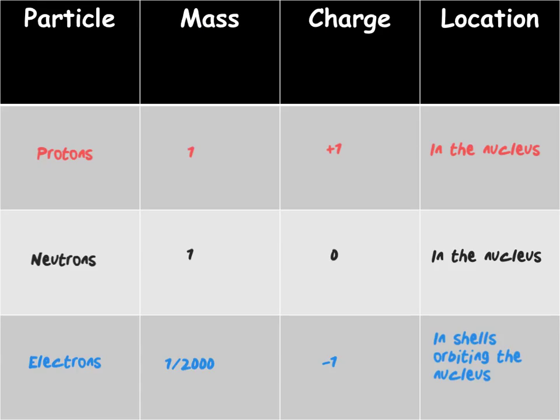For each of these subatomic particles, you need to know their name, their mass, their charge and their location. Protons have a mass of one. They have a charge of plus one. They are the positive subatomic particle. As we mentioned on the previous slide, they are found in the nucleus, in the centre of the atom. Also found in the nucleus are the neutrons. They also have a mass of one. However, they do not have a charge. They are neutral. Finally, you have electrons, who are found in shells orbiting the nucleus. Unlike protons, they have a negative charge of minus one, giving each atom a neutral charge. They have a mass of one over 2,000 or 0.0005. It's an incredibly small particle.